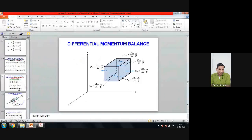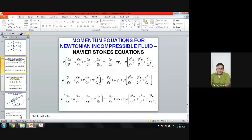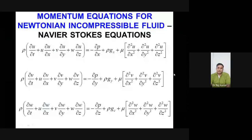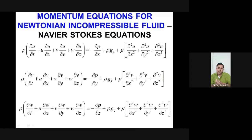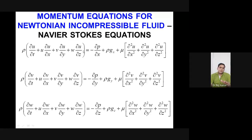So finally, over yesterday's and today's class, we have derived the Navier-Stokes equations for a differential element for a fluid that is incompressible and Newtonian. Incompressible means density is constant; Newtonian means viscosity is constant. With these two constraints, the momentum balance equations for x, y, and z directions are now complete.